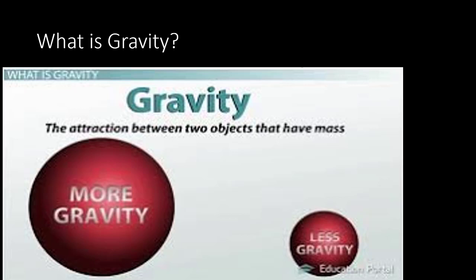So what is gravity? Gravity is the attraction between two objects that have mass. Look at this relationship: the larger the mass — the larger the object — the more gravity it has. And the smaller the object, the less gravity it has. For example, Earth has more gravity than the moon, because Earth is simply larger than the moon.